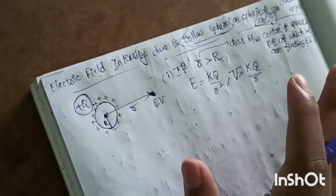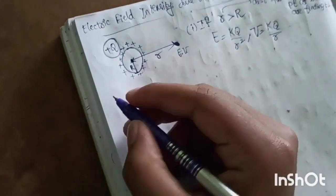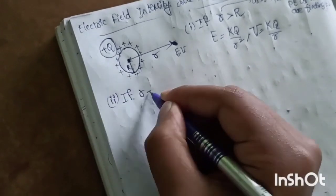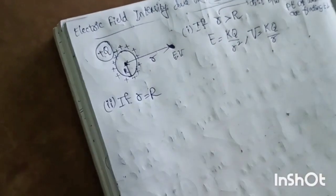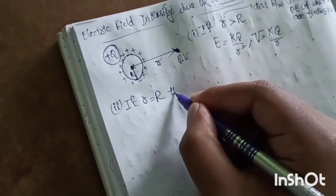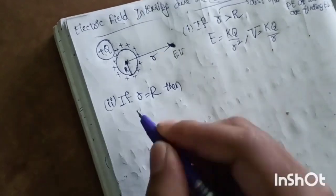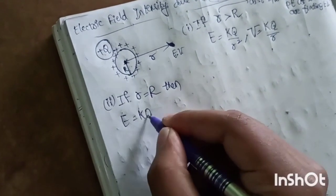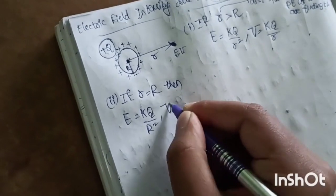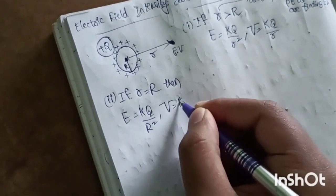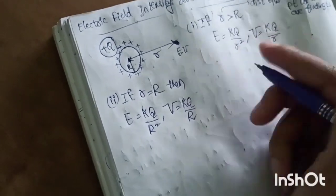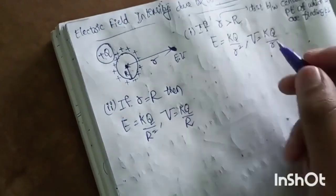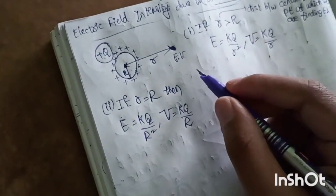For r greater than R — outside the sphere — the formula for E is kq by r squared, and V is kq by r. Here, r refers to the distance of the point from the center, and R is the radius of the sphere.